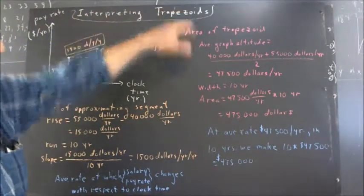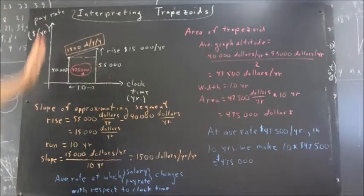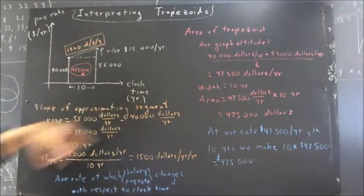Okay, our subject is interpreting trapezoids. We have a trapezoid on a graph of pay rate in dollars per year versus clock time in years.